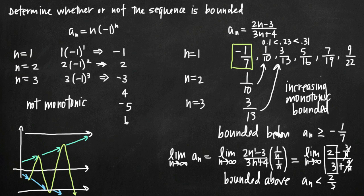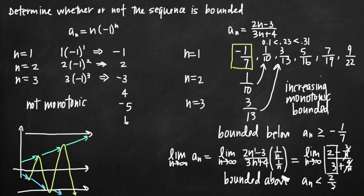One quick note: if we had found the sequence was decreasing instead of increasing, then the first term would be the largest value, not the smallest. So instead of using negative 1 seventh for bounded below, we'd use it for bounded above. We would then take the infinite limit to determine if the sequence is also bounded below. Essentially, for a decreasing sequence, we just switch those roles.